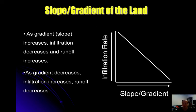Slope or gradient of the land: on a sloped landscape such as a hill or mountain, water more easily runs off rather than seeping into the surface. As gradient increases, the infiltration rate decreases. More water is going to run off than seep into the ground.